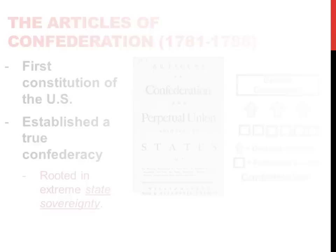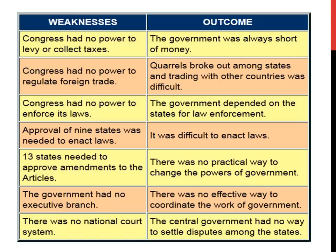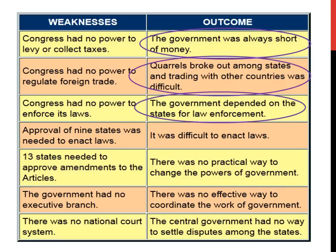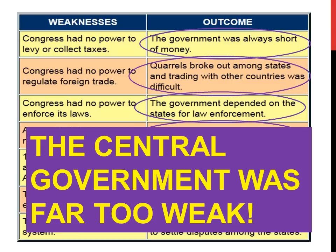The Articles of Confederation, however, would unravel very quickly due to a series of institutional weaknesses. First, Congress had no power to levy or collect taxes, leaving the government with a huge shortage of money and an inability to raise a militia. Second, Congress had no power to regulate trade, which created quarrels between the states. Third, Congress had no power to enforce its laws, leaving states largely responsible. Finally, it took 9 of the 13 states to enact a law, making the process far too complicated. In general, a central government that was far too weak was the biggest problem with the Articles of Confederation.